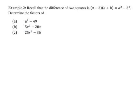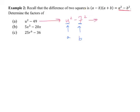Recall that the difference of squares is (a minus b)(a plus b) equaling a² minus b², because the middle terms cancel when you FOIL. For part A, we have u² minus 49. Rewrite it as u² minus 7². Since both terms are squared, a is u and b is 7. Plugging into the formula, this factors into u minus 7 times the quantity u plus 7.